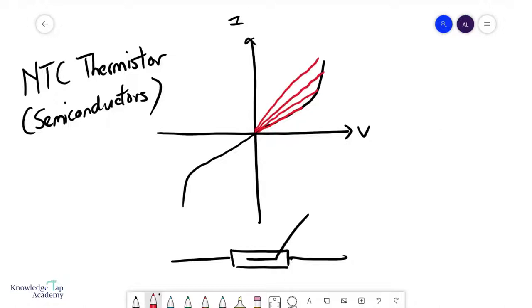Since the resistance of this component is the inverse gradient of the red line, we can say that as the potential difference across it increases, the resistance must decrease.